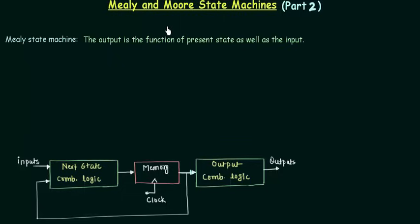In case of Moore state machines, the output is the function of only the present state, whereas if I talk about the Mealy state machine, the output is the function of present state as well as the input.